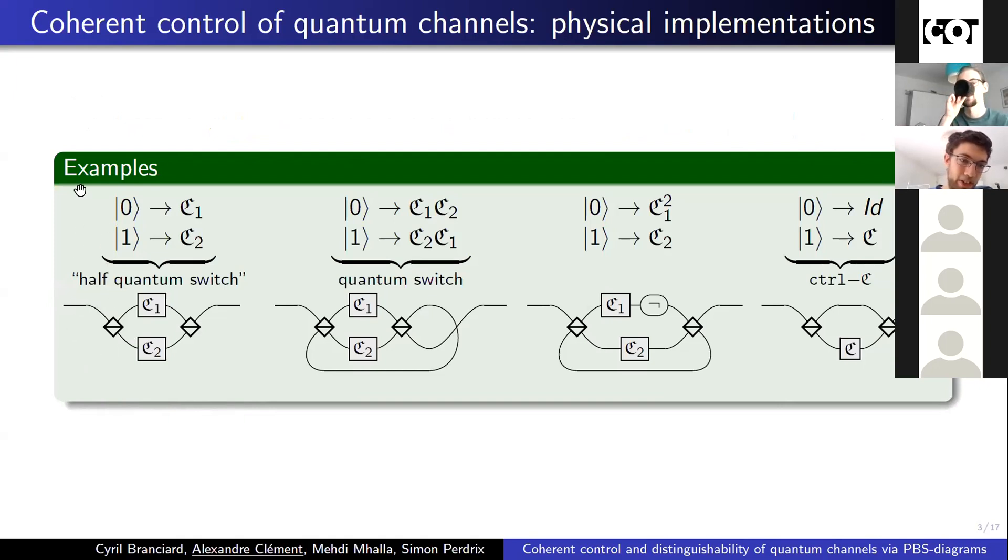For instance, the control qubit being stored in the polarization of a photon. Here is a polarizing splitter which reflects the basis state associated to zero and transmits the one. And this is a flip that exchanges the two basis states of the polarization. So here we are reflected and then transmitted, then finally reflected, which gives us what we want.